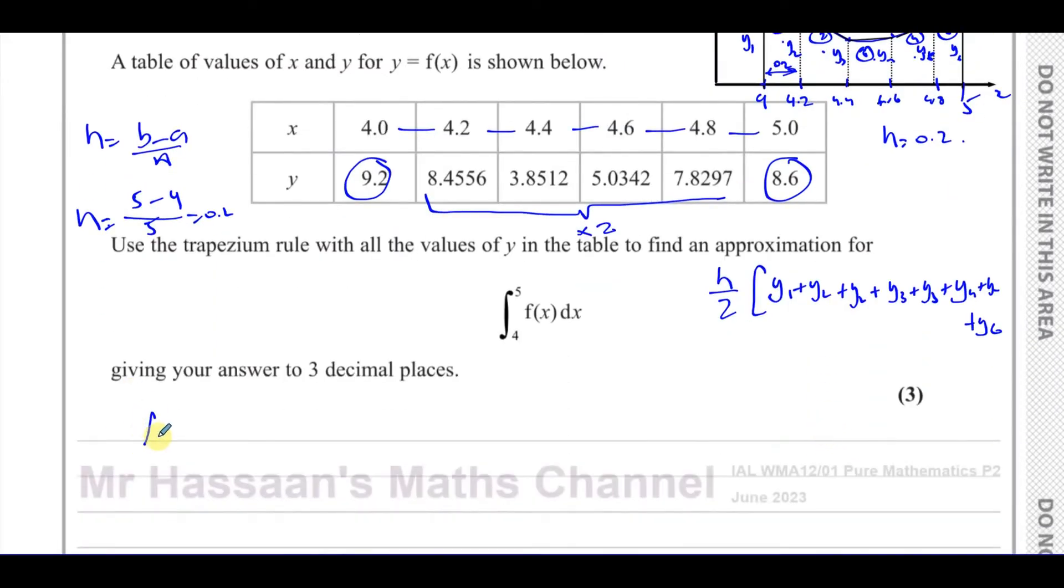So the area, or we can say the integral between 4 and 5 of F of X is going to be given by 0.2 over 2, H over 2, times the first and the last are going to be written one time, so 9.2 plus 8.6, and all the others are going to be multiplied by 2. So you have 2 times 8.4556 plus 3.8512 plus 5.0342 plus 7.8297.